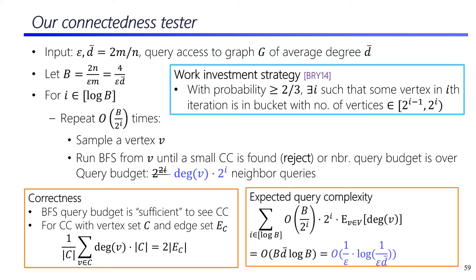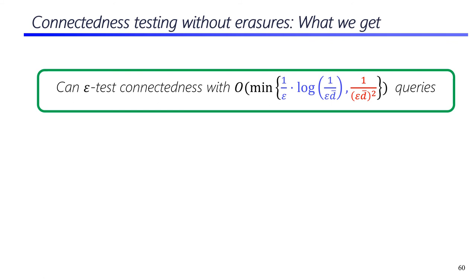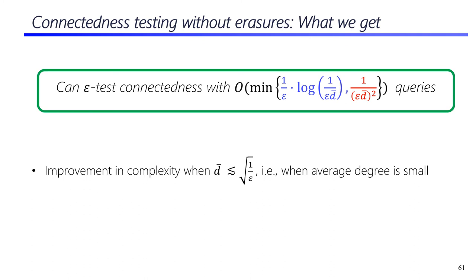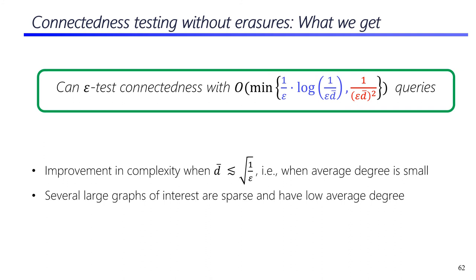The expected query complexity of our tester can be worked out to the desired expression by simplification. Our final tester runs either the prior best tester with complexity 1 over epsilon-D-bar-squared, or the tester just described, with the choice based on the relative values of D-bar and epsilon. The complexity of this final tester is better than the prior known best bound when the average degree is smaller than square root of 1 over epsilon. This improvement is particularly relevant for large sparse graphs with low average degree.